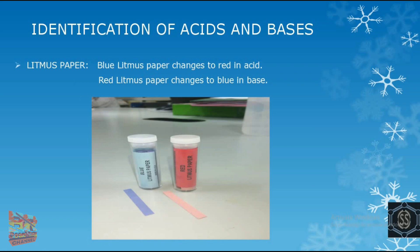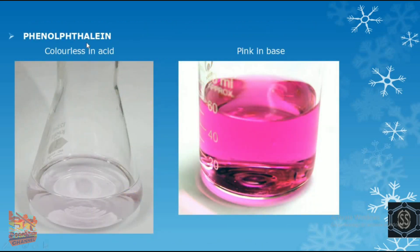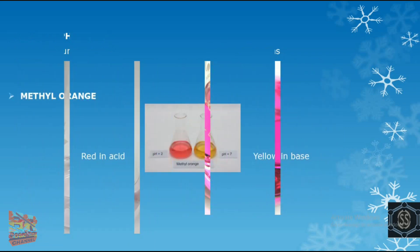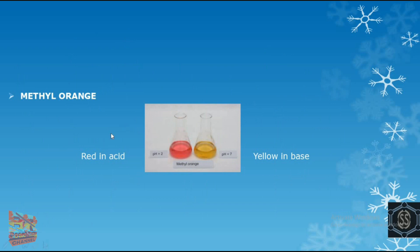There are two types of litmus paper: blue litmus paper and red litmus paper. When blue litmus paper is dipped in acid, it changes to red. When red litmus paper is dipped in base, it changes to blue. Next is phenolphthalein — it is colorless in acid and turns pink in base. Next is methyl orange — it is red in acid and yellow in base.